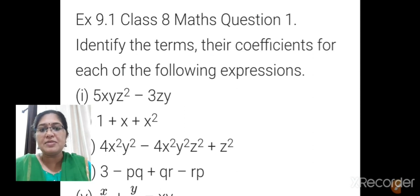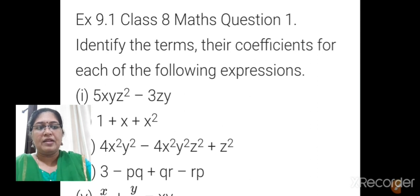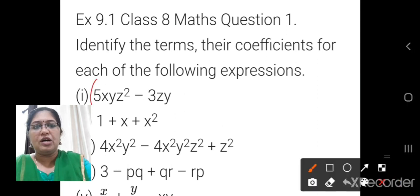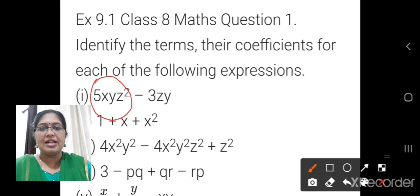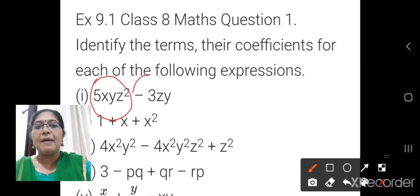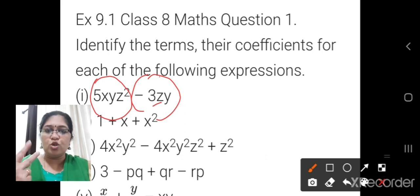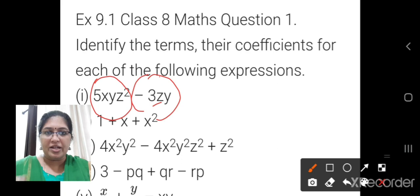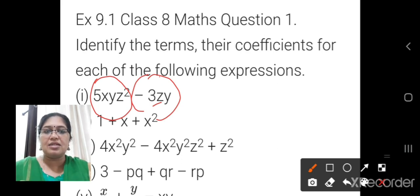How many terms are there? Two terms are there. There are two terms: 5xyz squared is the first term. For the second term, you should take the negative sign also, so it is minus 3zy. So two terms are there.